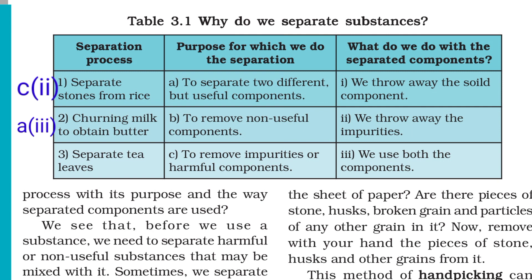Second example: churning milk to obtain butter. The purpose of this process is to separate two different but useful components. What do we do with the separated components? We use both components.